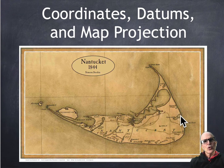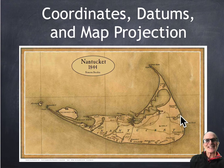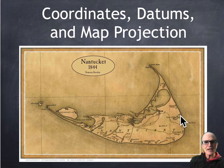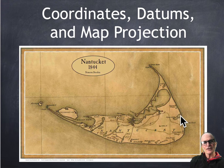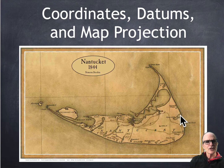Today I'd like to talk about coordinates, datums, and map projections. These are the way we fix things in space and assign locations that are unique and stable for our features. That way we can combine features from data layers collected at different times with different methods and make sure that those features line up on top of each other.